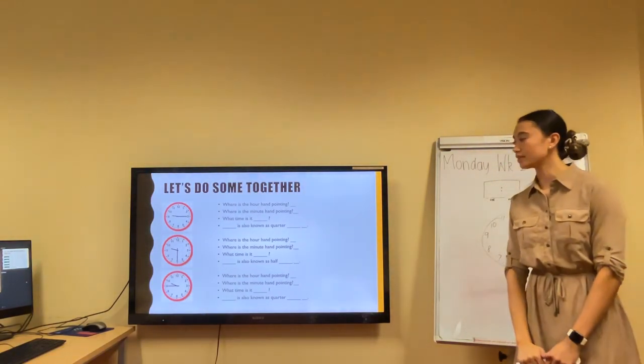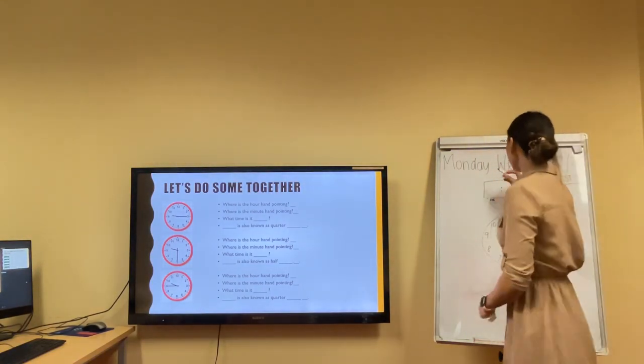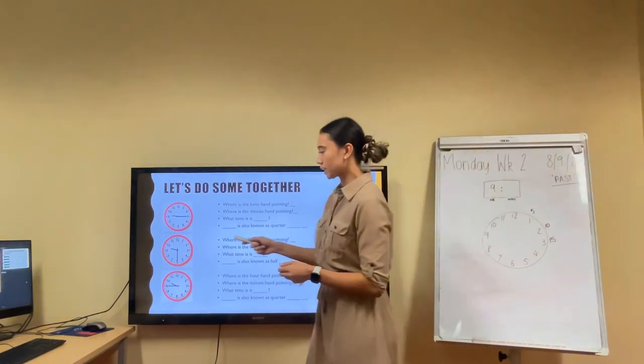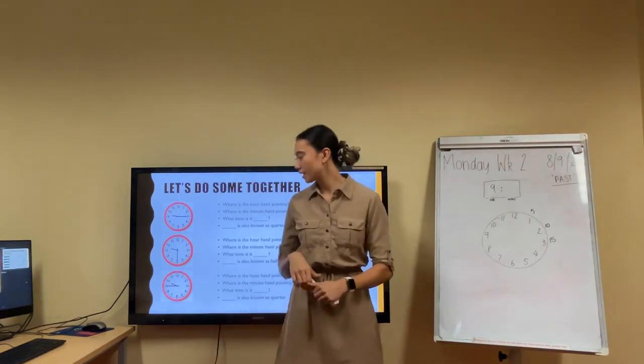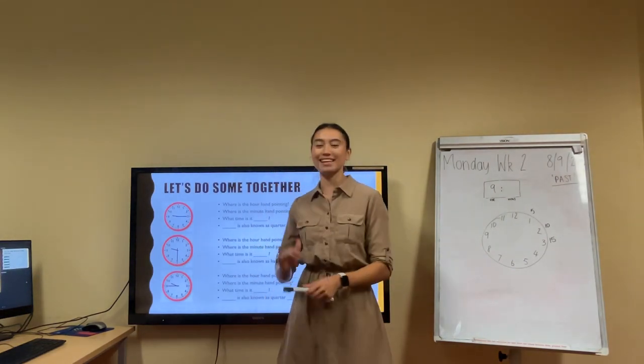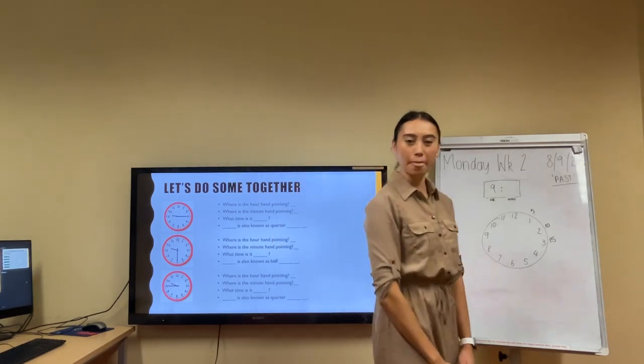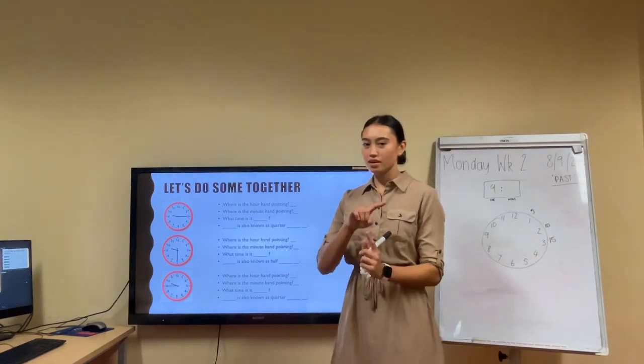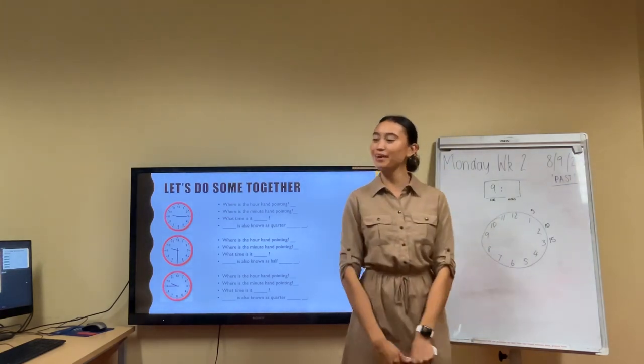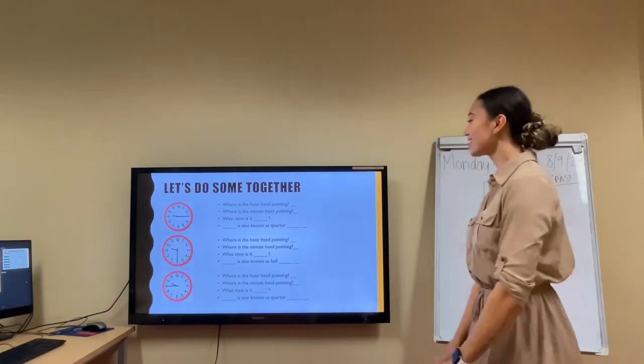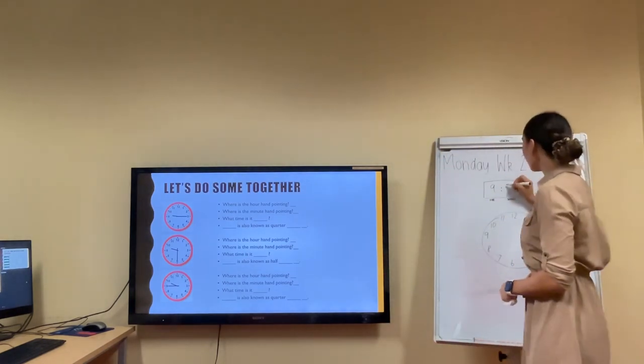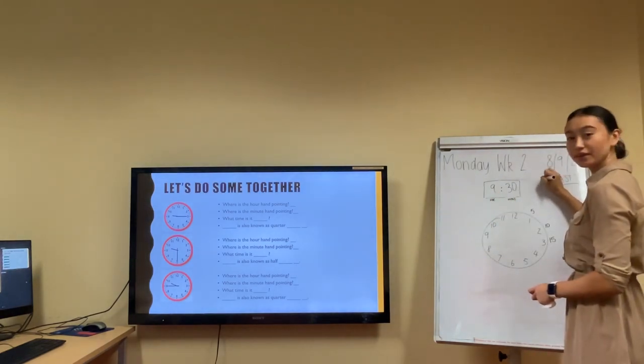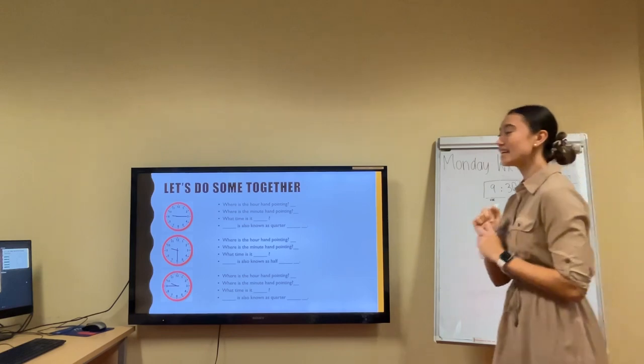Where is our hour hand pointing? Yes, it is pointing at the 9 again. Now, we can see that it's not directly on the number 9. It is exactly in between the 9 and 10. If it's exactly between 9 and 10, does that mean it's half past 9? Is that how we would refer to it? Yes. So 9:30 is the same as half past. Keyword again, keyword past. It is half past 9.